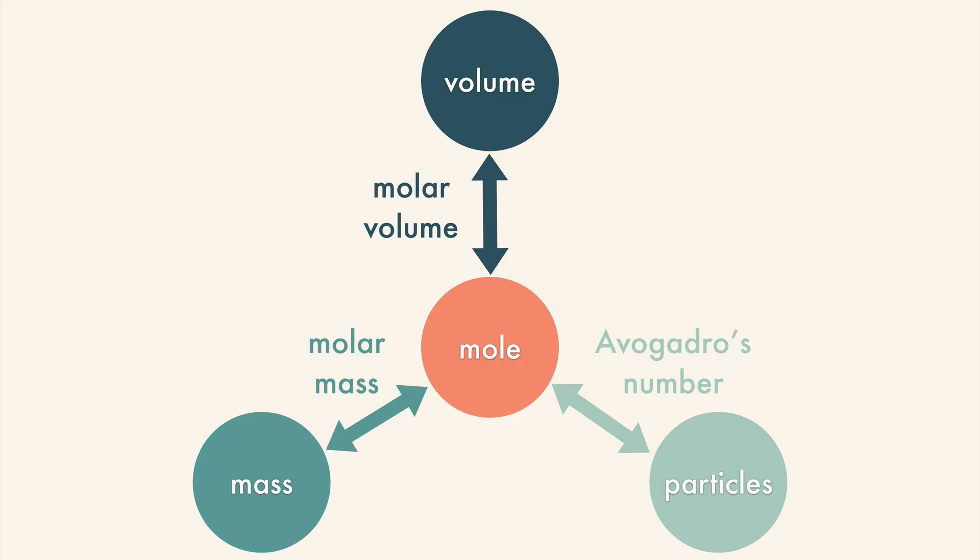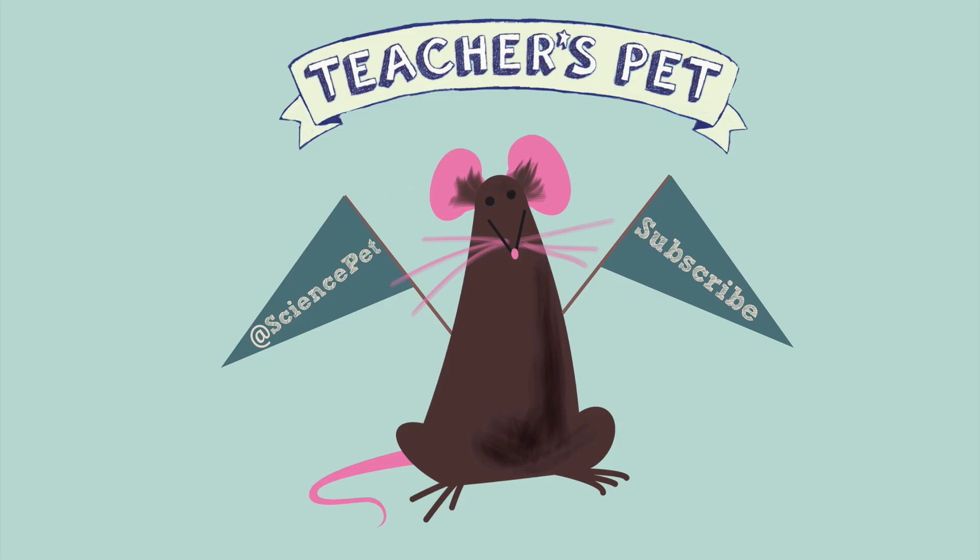Conversions can even take multiple steps. You could start with mass, convert to moles, then convert to volume. This map of Mole Island can help guide your steps before you begin converting. Thanks for watching this episode of Teacher's Pet. Don't forget to like and subscribe, and follow me on Twitter at SciencePet.